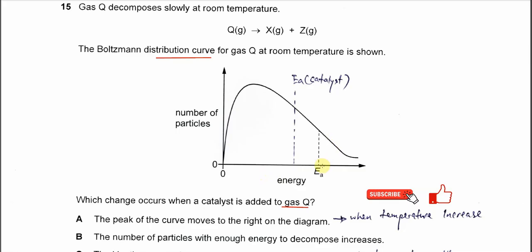When we say EA get lowered, means initially EA is here. So lower EA means this dotted line will move to the left, because when it's moved to left it's getting a smaller value. So we say that activation energy gets lowered.